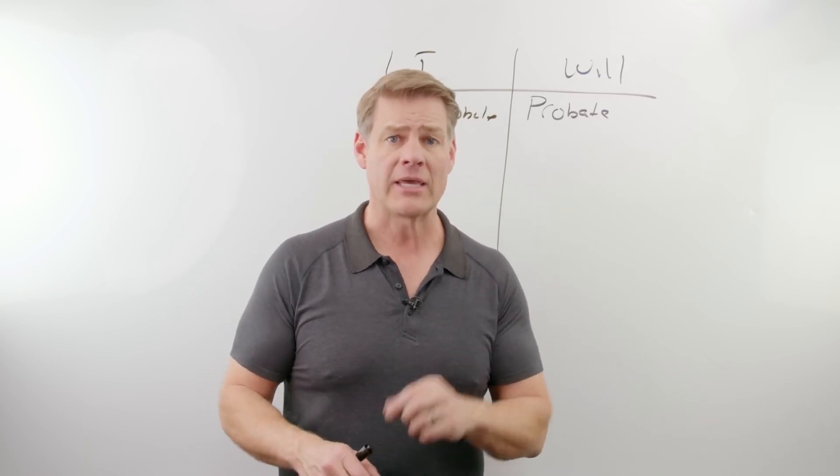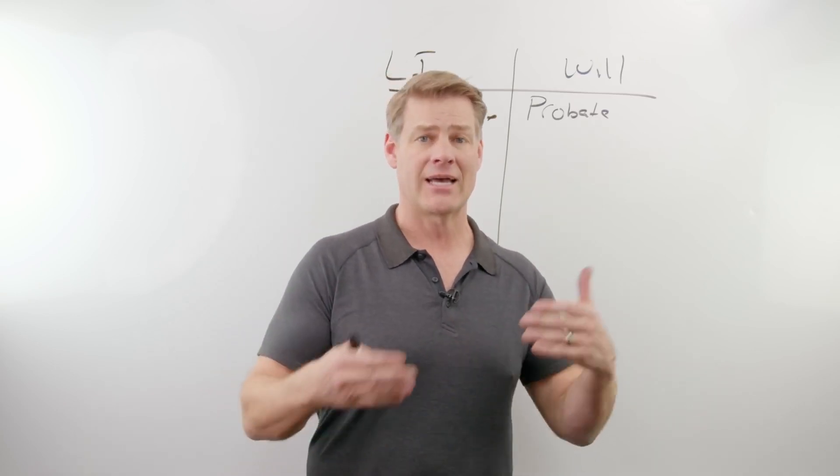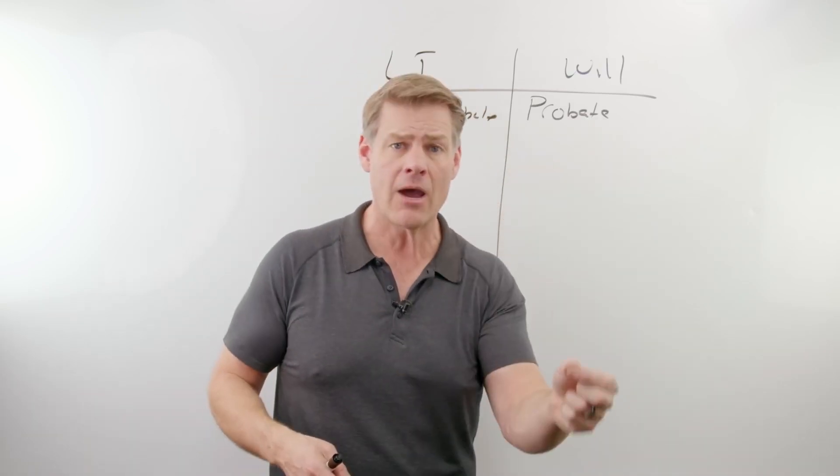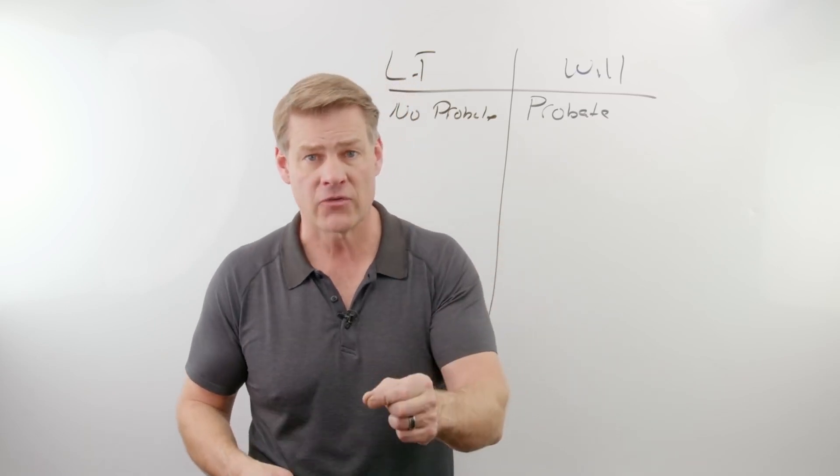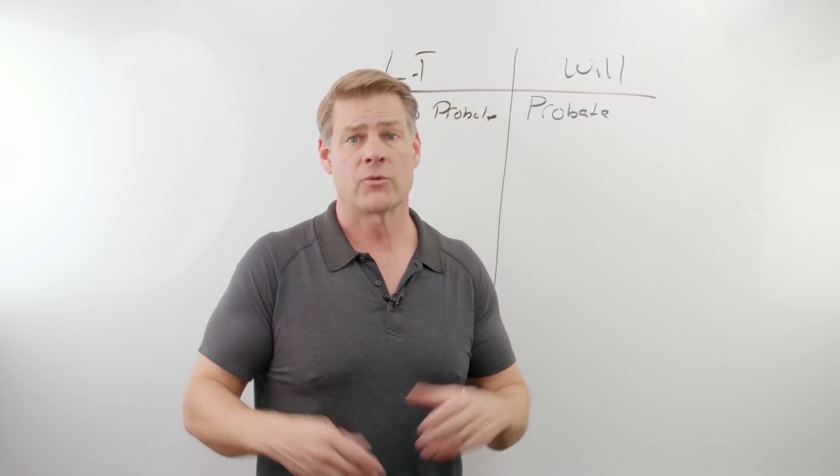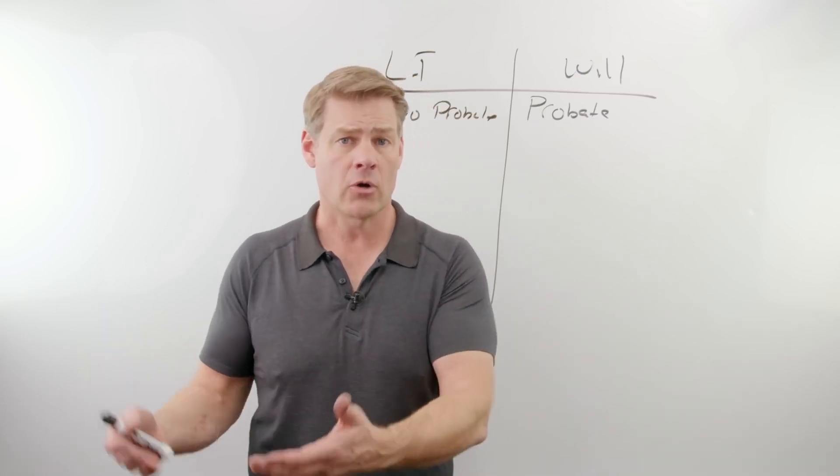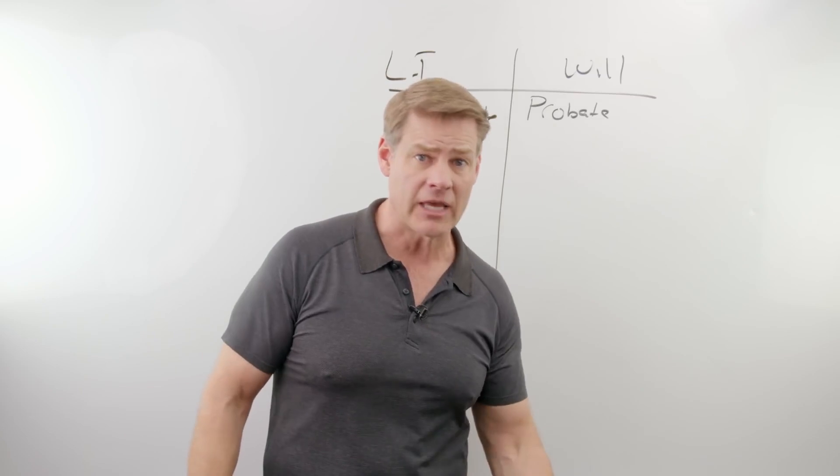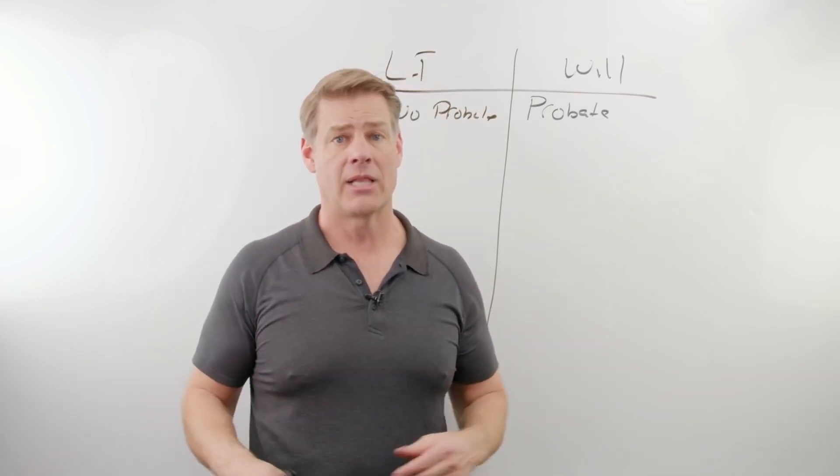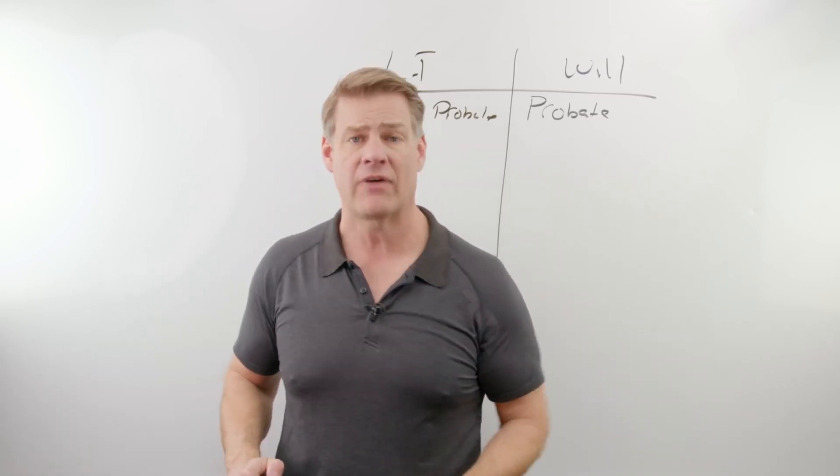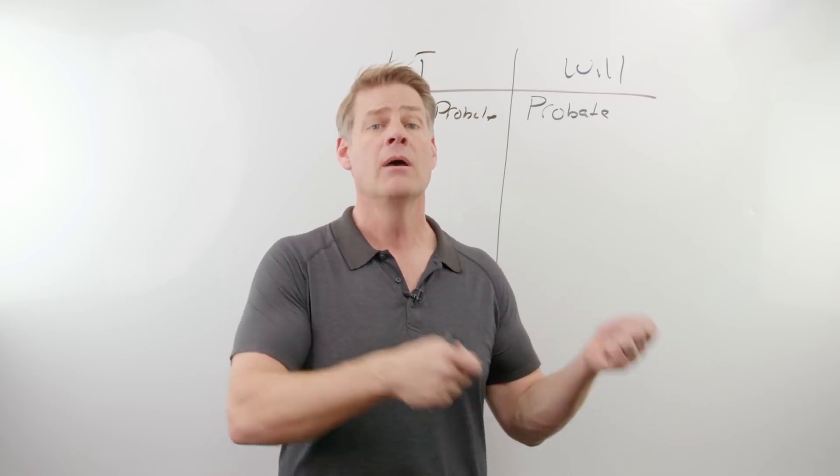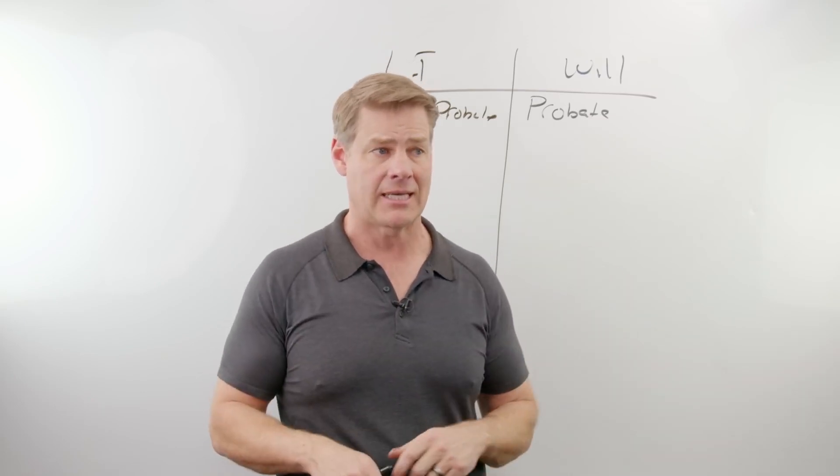Because when you open the probate, you receive what are referred to as letters of testamentary, which means it gives the executor of your estate the power now to transfer assets to whoever the beneficiaries are under that will. And so when I open up a probate, the court will give me letters of testamentary, maybe I get 30 of them because my client happened to have a lot of titlable assets. And then when I contact a financial institution, they're going to say give us your letters of testamentary so we know that you have the power by the court to move this asset.